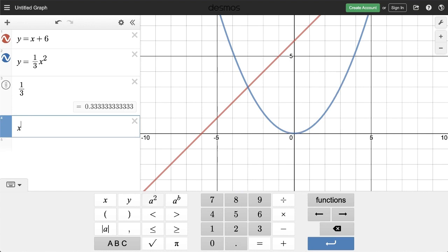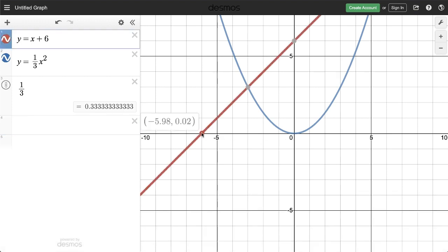Want to raise something to a different power? Enter your base, press a to the b, and then type your exponent. You can also enter exponents from a physical keyboard by holding shift and pressing six. To identify points of interest like x and y intercepts or points of intersection, simply tap or click and Desmos will reveal the coordinates.